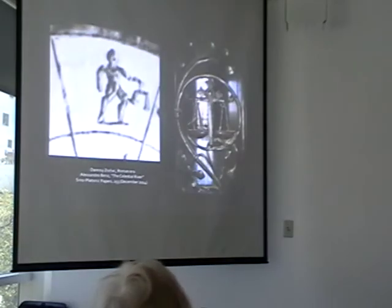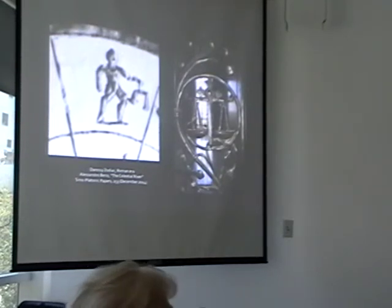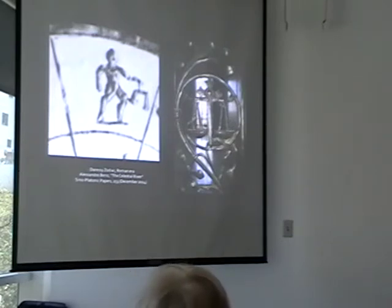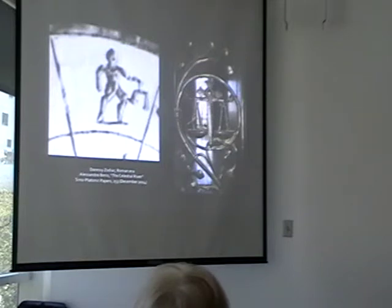Next is Libra, the only zodiac symbol that isn't some kind of living creature — it's not a person or an animal. For the Babylonians this was scales. For the Greeks it wasn't a separate constellation at all — it was the claws of Scorpius the Scorpion. But when you get to the Romans, they identified it as scales again, being held by Justice.